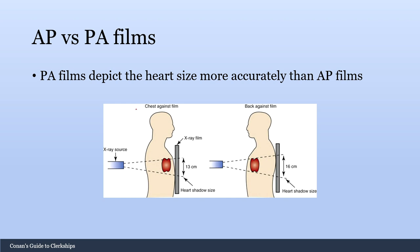AP vs PA describes the orientation at which an x-ray was shot. On the left side of the diagram, you can see that the x-ray first enters the body at the posterior side before exiting at the anterior side — this is called a PA film. On the other hand, if the x-ray is shot at the anterior part of the body first before hitting the posterior part, that is an AP film.